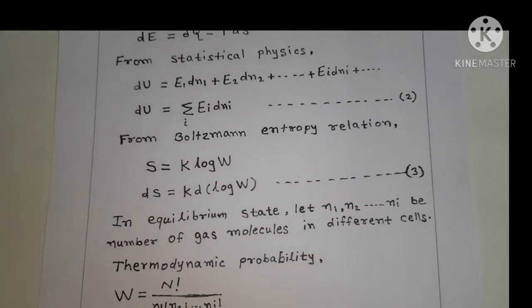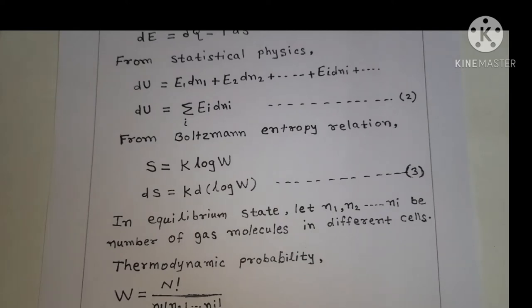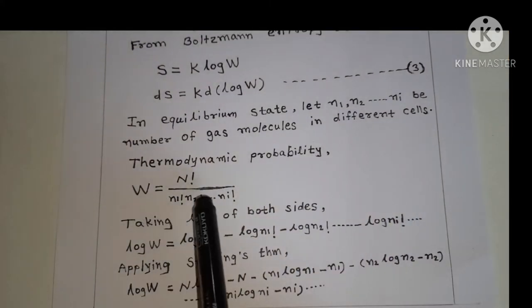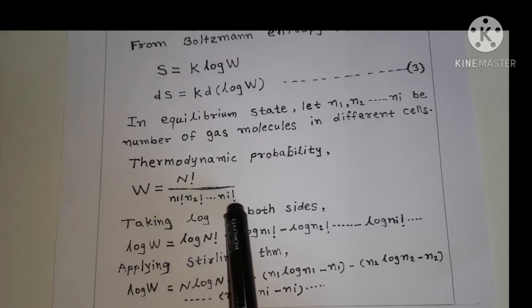In the equilibrium state, the number of particles n1, n2, up to ni of gas molecules in different cells continuously change, but they keep values very close to the state of maximum probability. The thermodynamic probability W is given by: W equals N! divided by (n1! · n2! · ... · ni!). Taking the log of both sides: log W equals log N! minus log n1! minus log n2! minus ... minus log ni!, using the formula log(a/b) = log a minus log b.